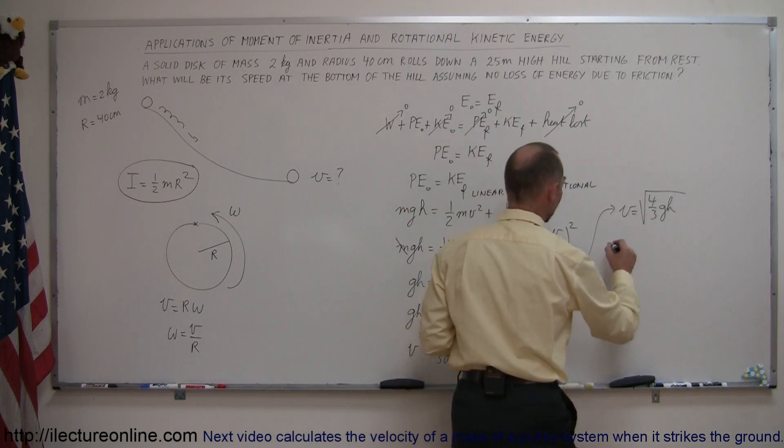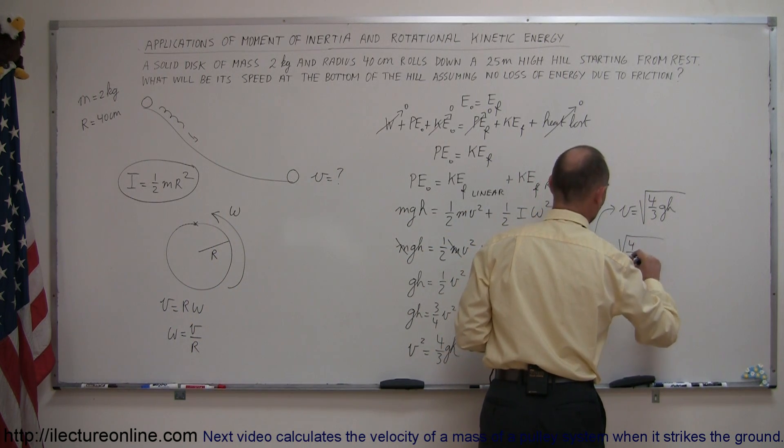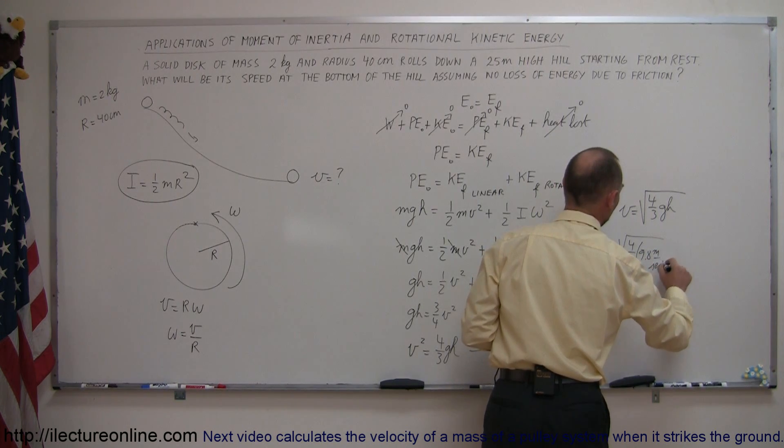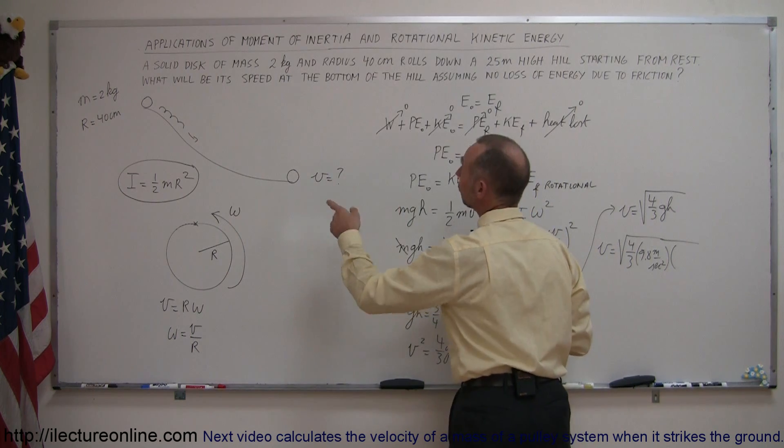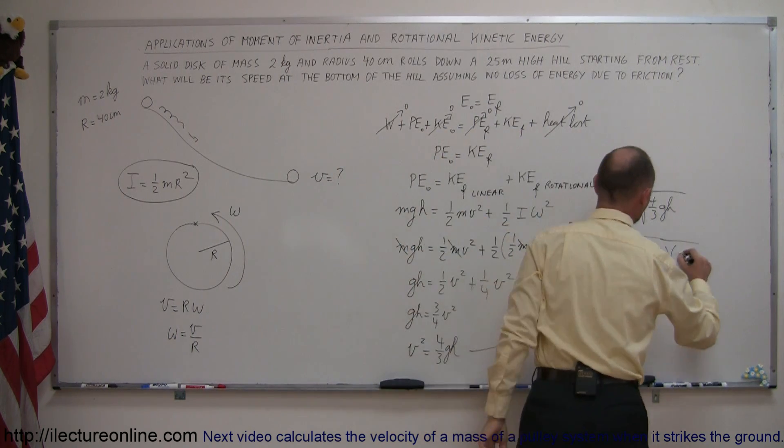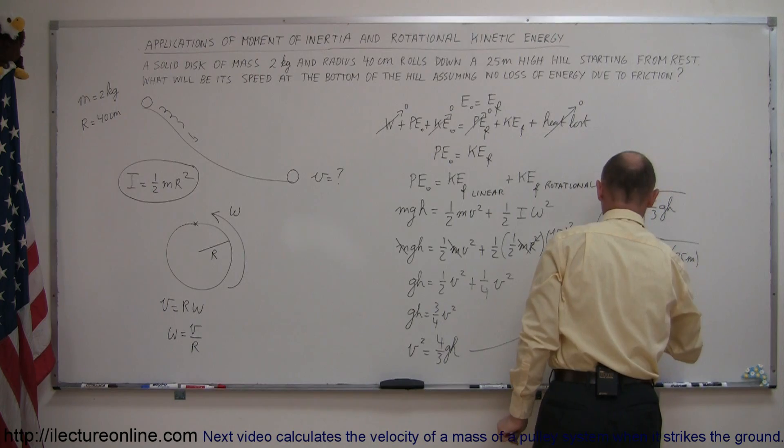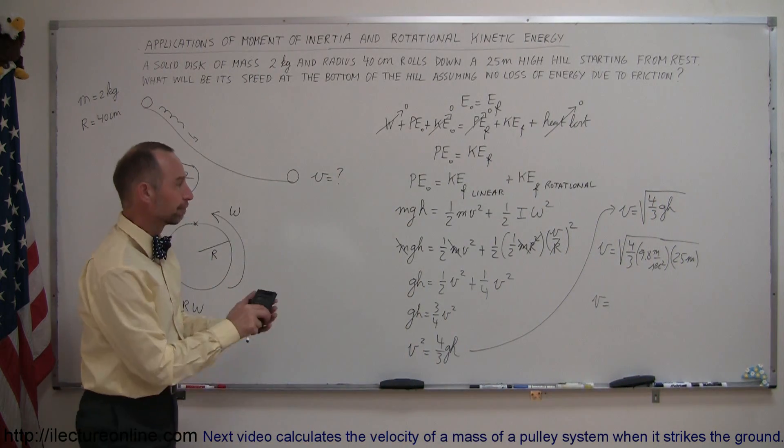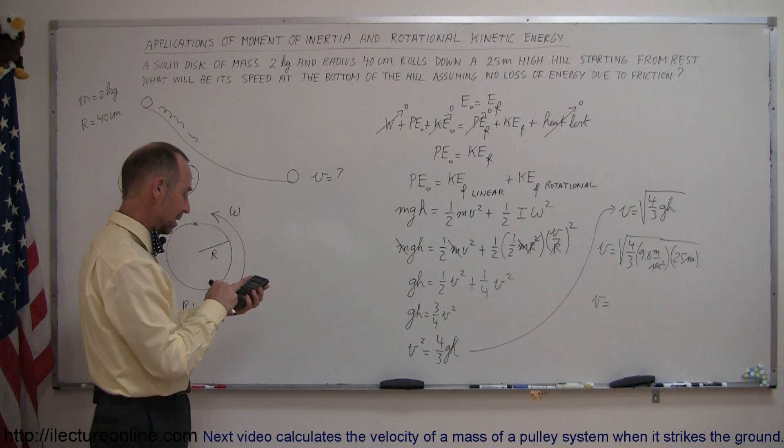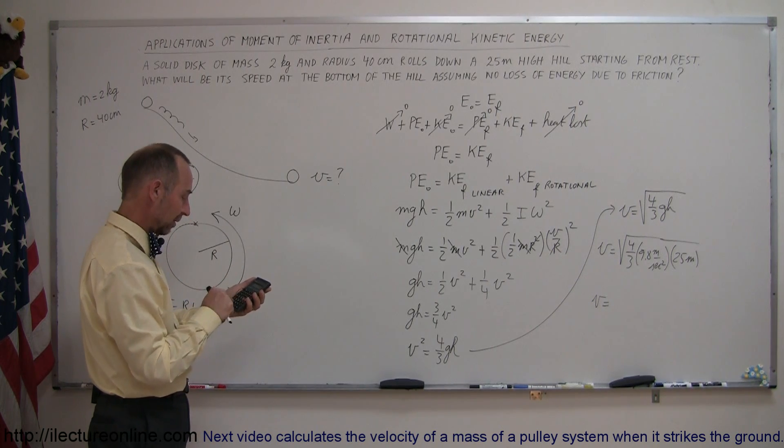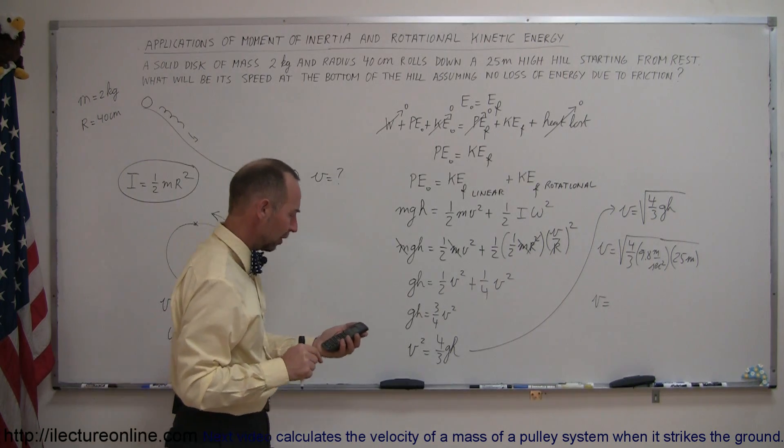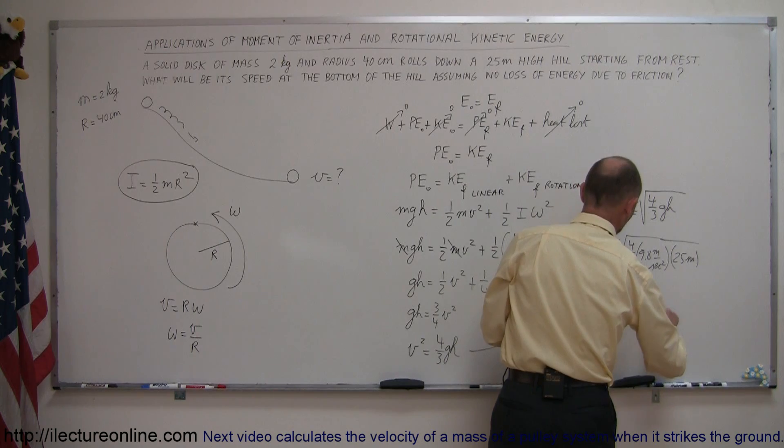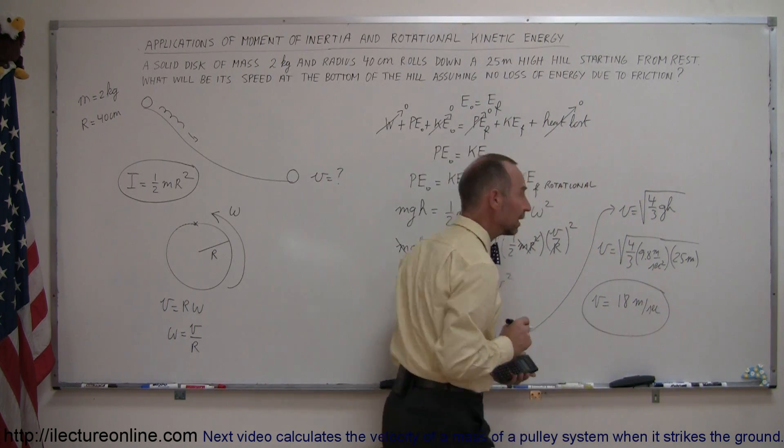Now, of course, plug in the rest of the numbers. We can say that velocity equals the square root of four-thirds times g, which is 9.8 meters per second squared, multiplied times h. We start at a height of 25 meters, and let's see what the final velocity is of this rotating wheel. So we have 25 times 9.8 times 4 divided by 3, and then take the square root, and it turns out the final velocity will be 18 meters per second, and there's the answer.